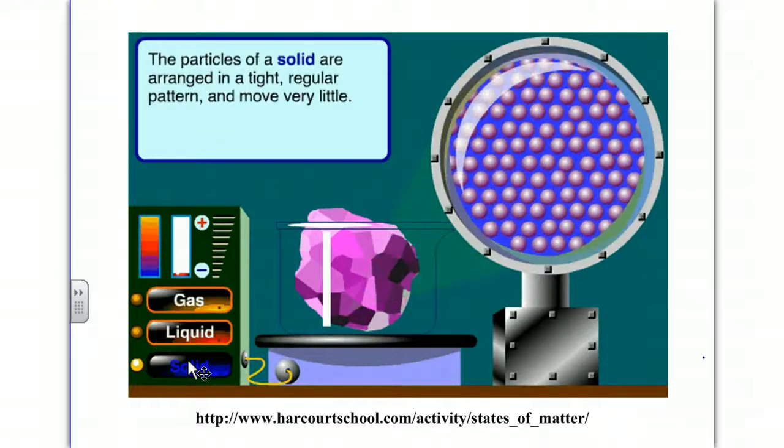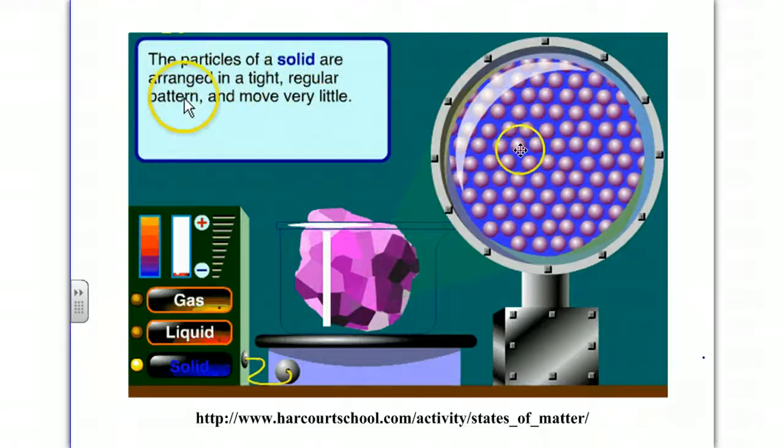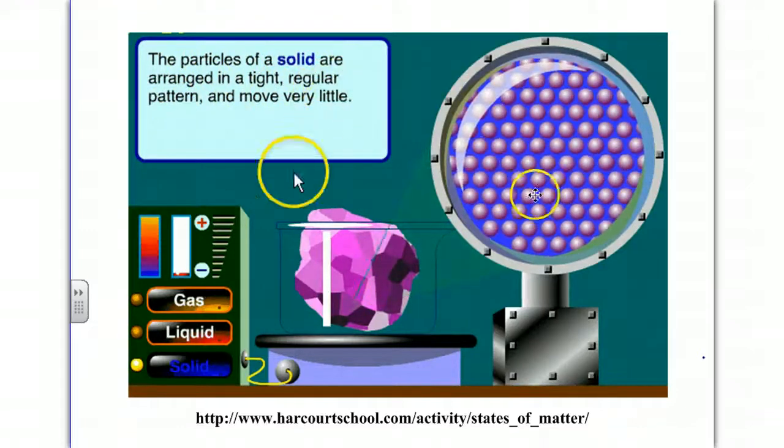If we add heat, such as clicking on liquid, then we'll notice the temperature gauge is going to increase, and we'll end up melting the solid, causing the molecules to be able to flow around one another, such as in a liquid.